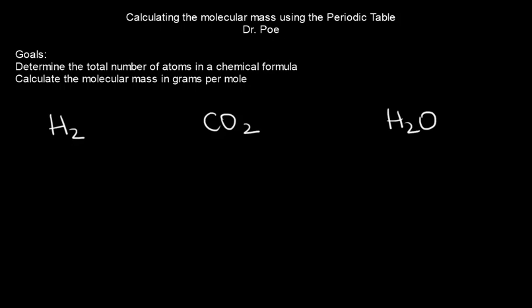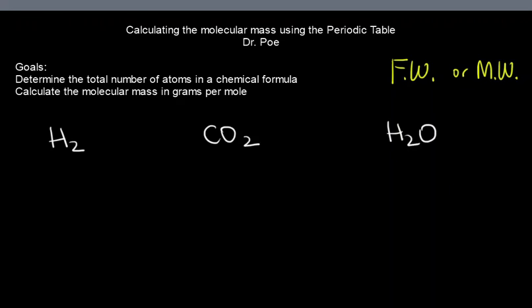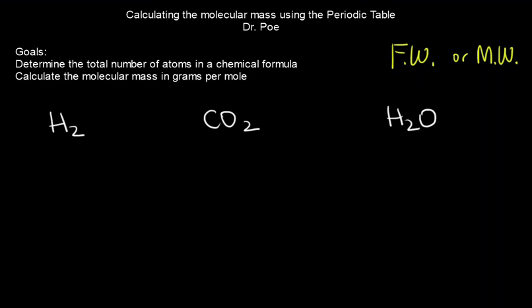Okay, we are going to go ahead and calculate molar mass using the periodic table. This can also be called formula mass or formula weight, so it can be abbreviated if you're looking at a bottle, for example, FW, or molecular mass or molecular weight, MW. So if you're looking at a bottle of a chemical, what does that number mean? It really means grams per mole, and that's what we're talking about right here.